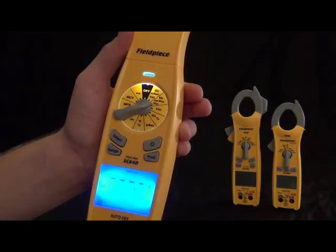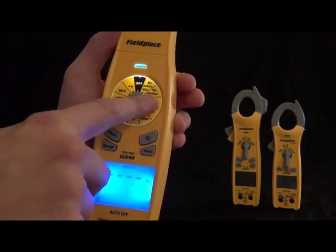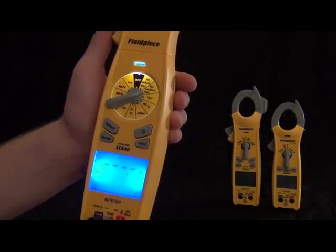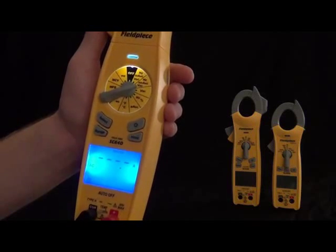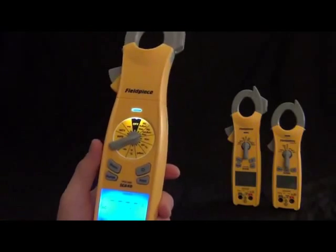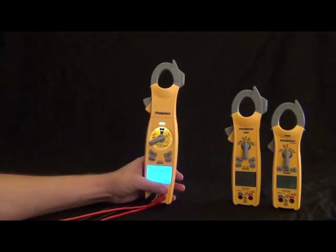All right, now we got the SC400 series, and this particular one is the SC440. And you'll notice this is also a dual display, just a nice mid-size package. This one still has the magnet on the back, so you can get it up out of the way. It also still has the in-rush, just like the 600 series.